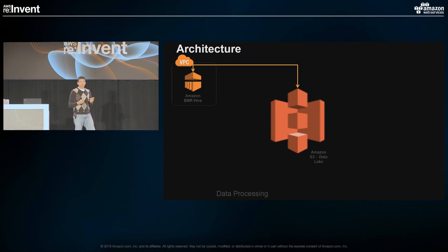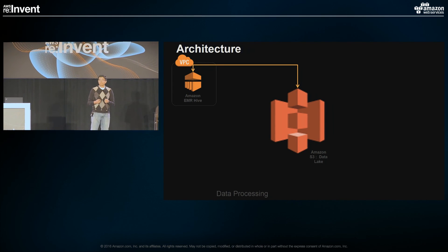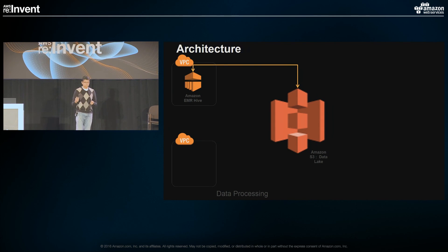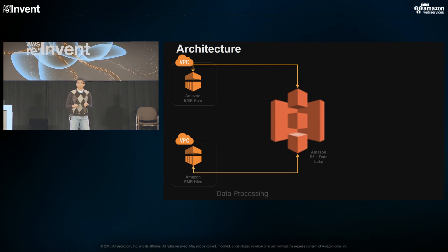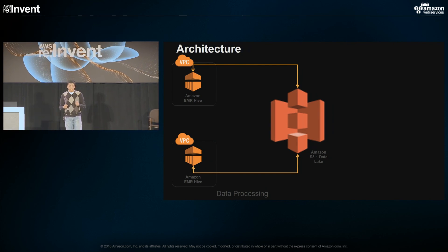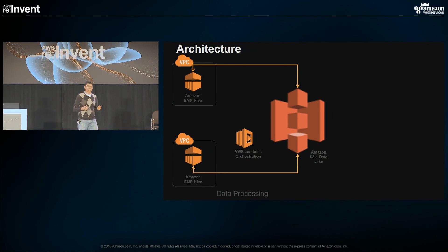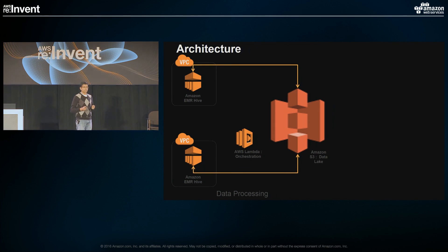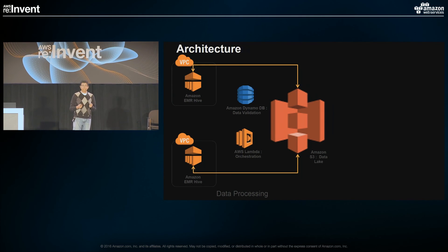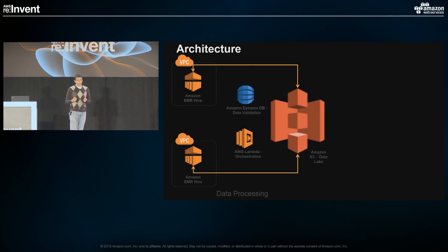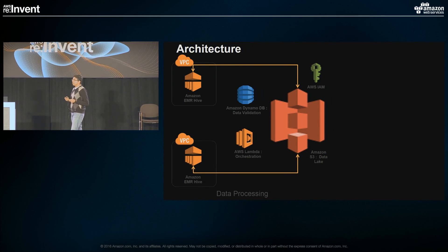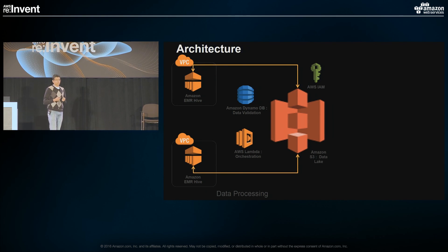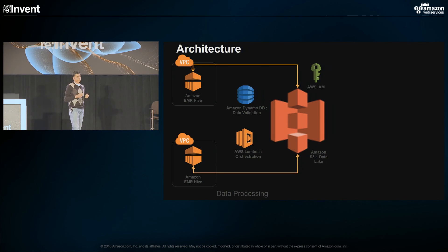There are several EMR clusters spinning up and down, coming in and out in different regions and different availability zones, all doing the same thing. We have orchestrated all this using AWS Lambda, which Gaurav will talk about in detail. We use Amazon DynamoDB to store some of our data validation metrics, and we use IAM to control access — who can read, who can write — ensuring those are enforced.